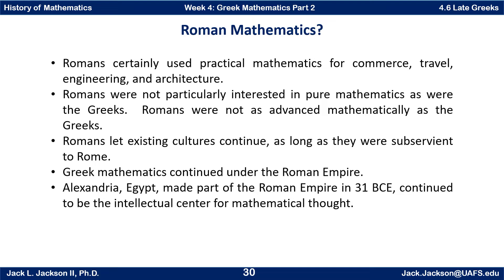Alexandria, Egypt was made part of the Roman Empire in 31 BCE, but it continued to be the intellectual center for mathematical thought, although it received progressively less and less support from the state. When the Ptolemies ruled Egypt, they supported the museum and library at Alexandria with stipends for the scholars who worked there. That kind of support started eroding and becoming less and less over time.